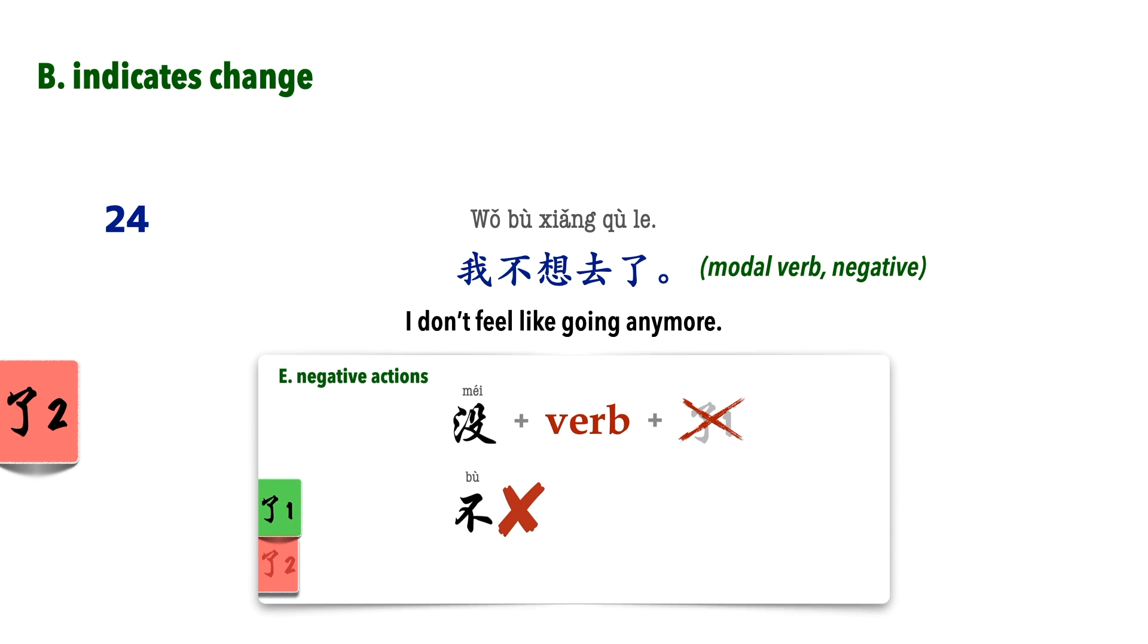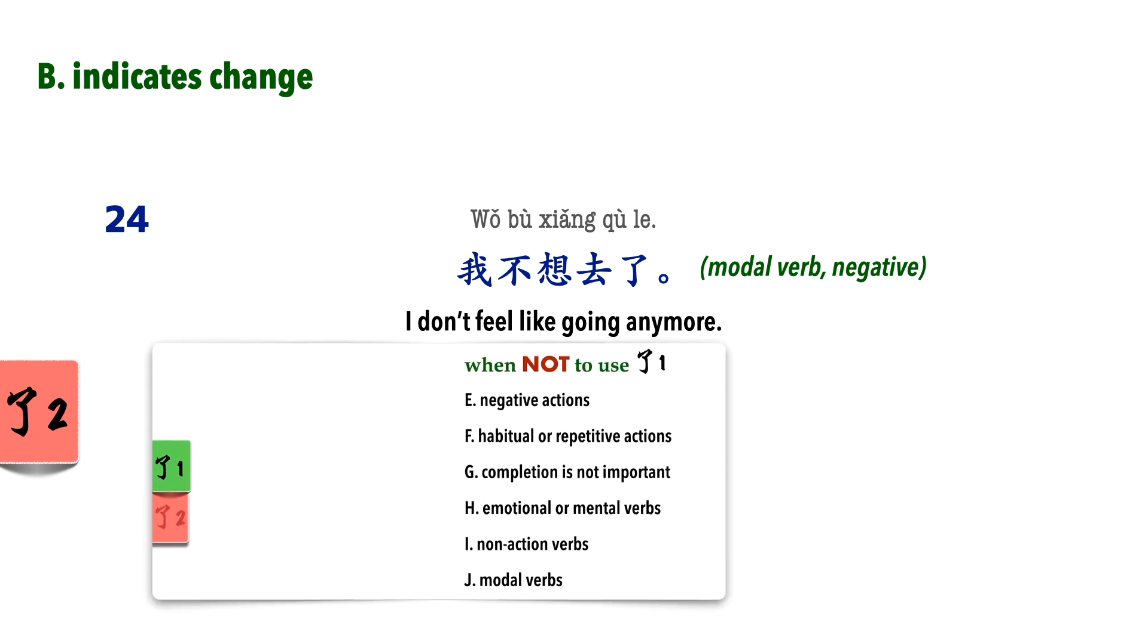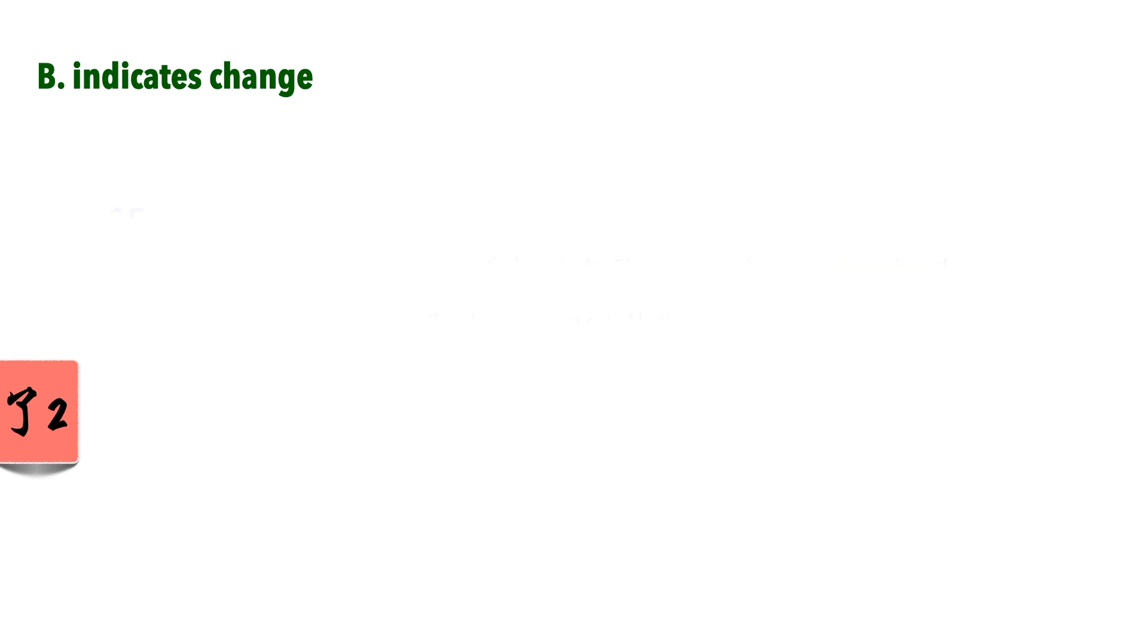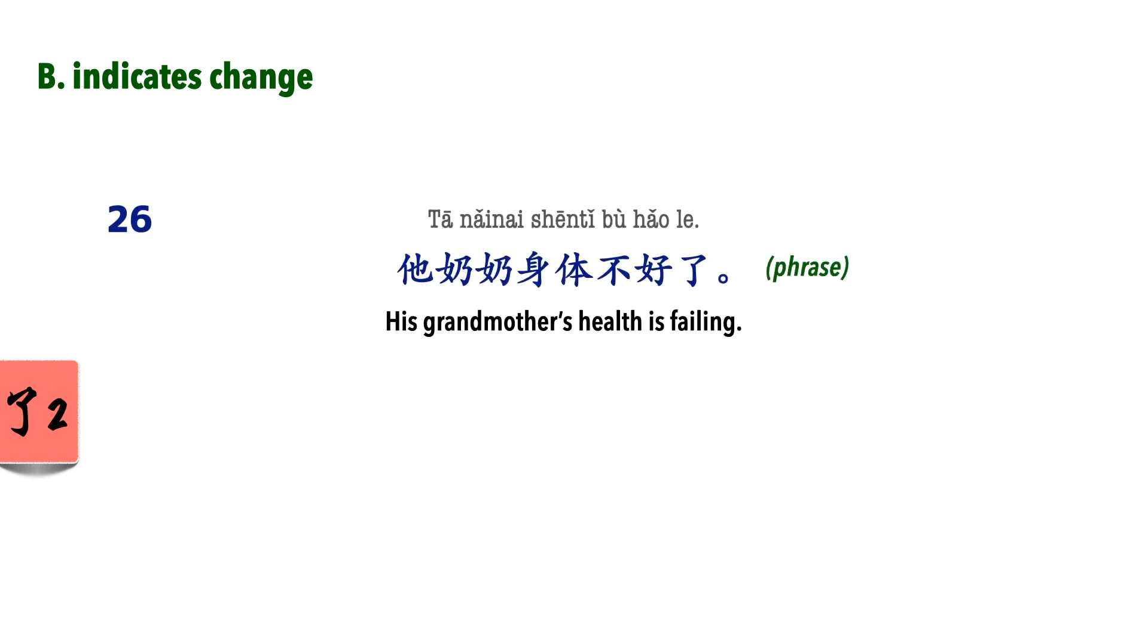If you recall, for negatives in 了1, we can only use 没, not 不. For 了2, both 不 and 没 are often used. Also, we can't use modal verbs for 了1, but as you can see here, we can use them with 了2. 手机没电了. It had battery earlier, but not anymore. 他奶奶身体不好了. His grandmother used to be better in health, but now no longer.